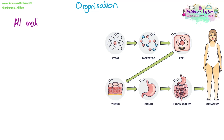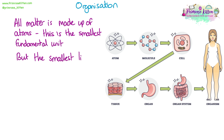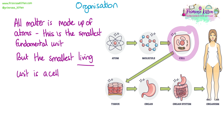Organisation. All matter is made up of atoms, the smallest fundamental unit in the universe — the smallest particle that makes up everything we can see in every molecule. We need to be able to describe some specialised cells and how they are adapted to carry out their specific function.